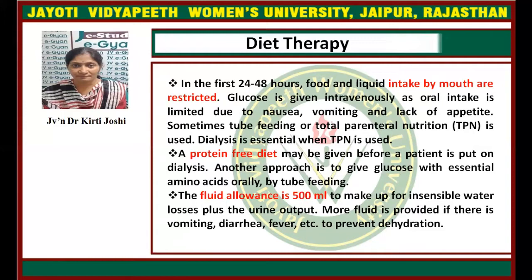Dialysis is essential when TPN is used. A protein-free diet may be given before a patient is put on dialysis. Another approach is to give glucose with essential amino acids orally or by tube feeding. The fluid allowance is about 500 ml to make up insensible water losses plus the urine output. More fluid is provided if there is vomiting, diarrhea, or fever to prevent dehydration.